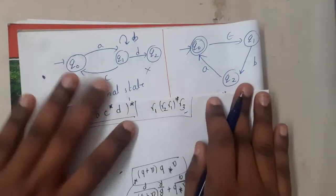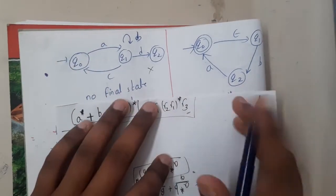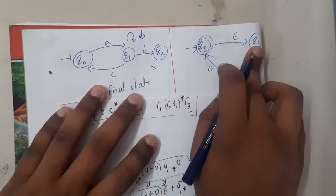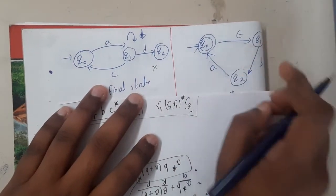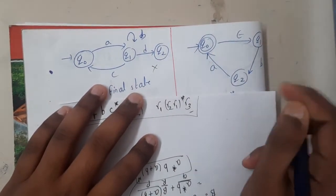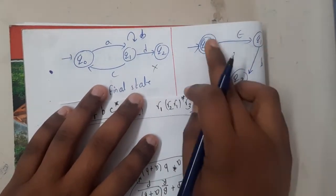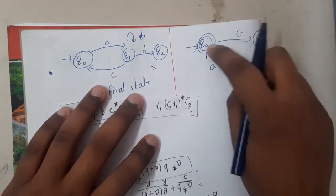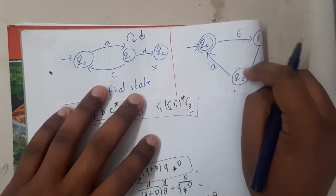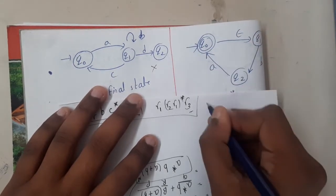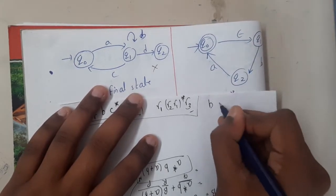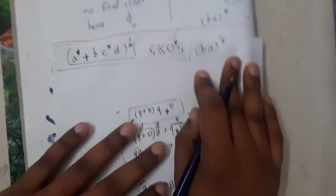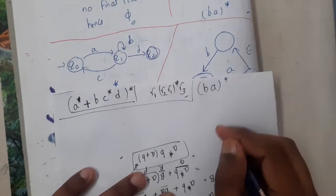If we start at q0, the epsilon transition allows going to q1 for free. From q1, I go to q2, and from q2 I go back to q1 — so this round-trip is free of cost, meaning I can connect them directly. It starts with ba pairs, so the answer is (ba)*.